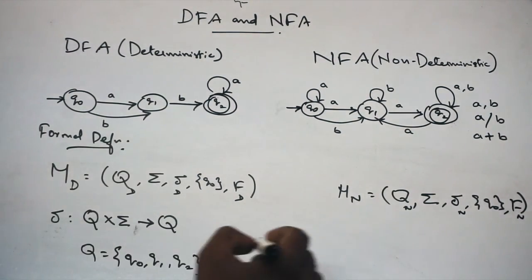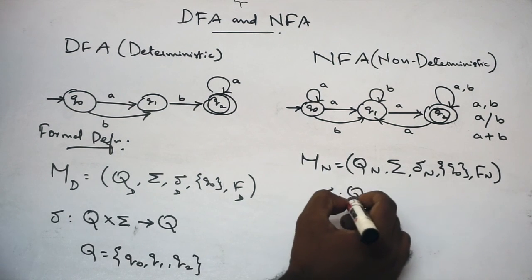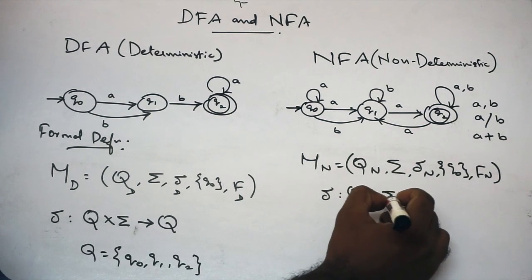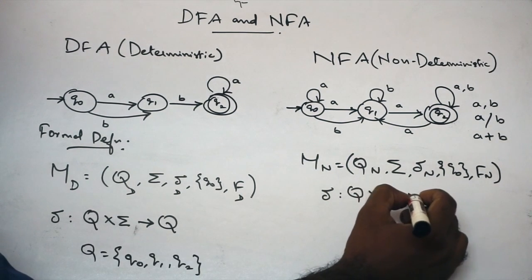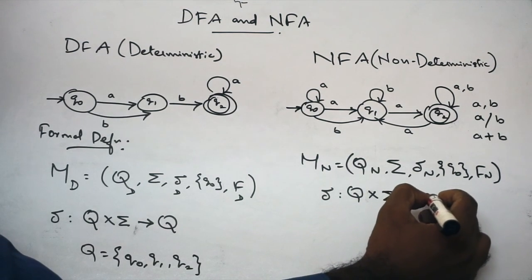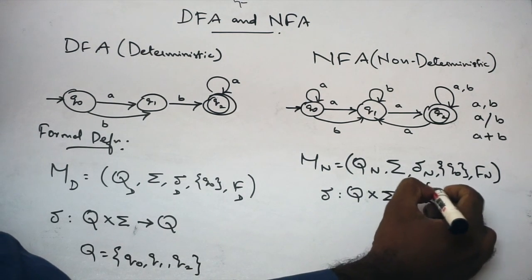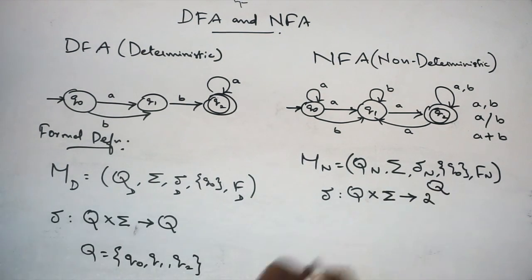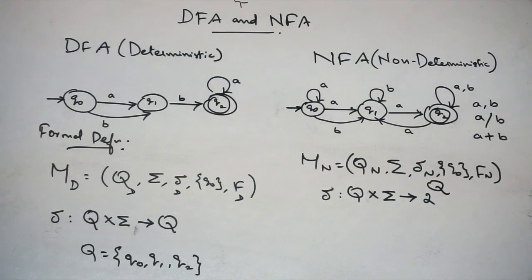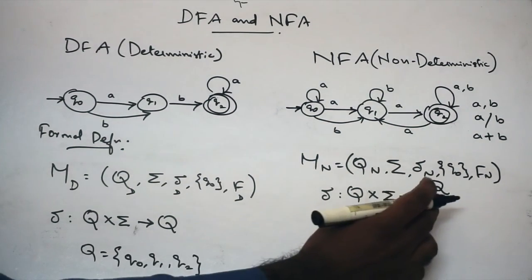But for NFA, the transition function is defined differently. States, Cartesian product, alphabets symbol — what does it give? It gives 2 power Q. The output is 2 power Q — that means a subset of states.